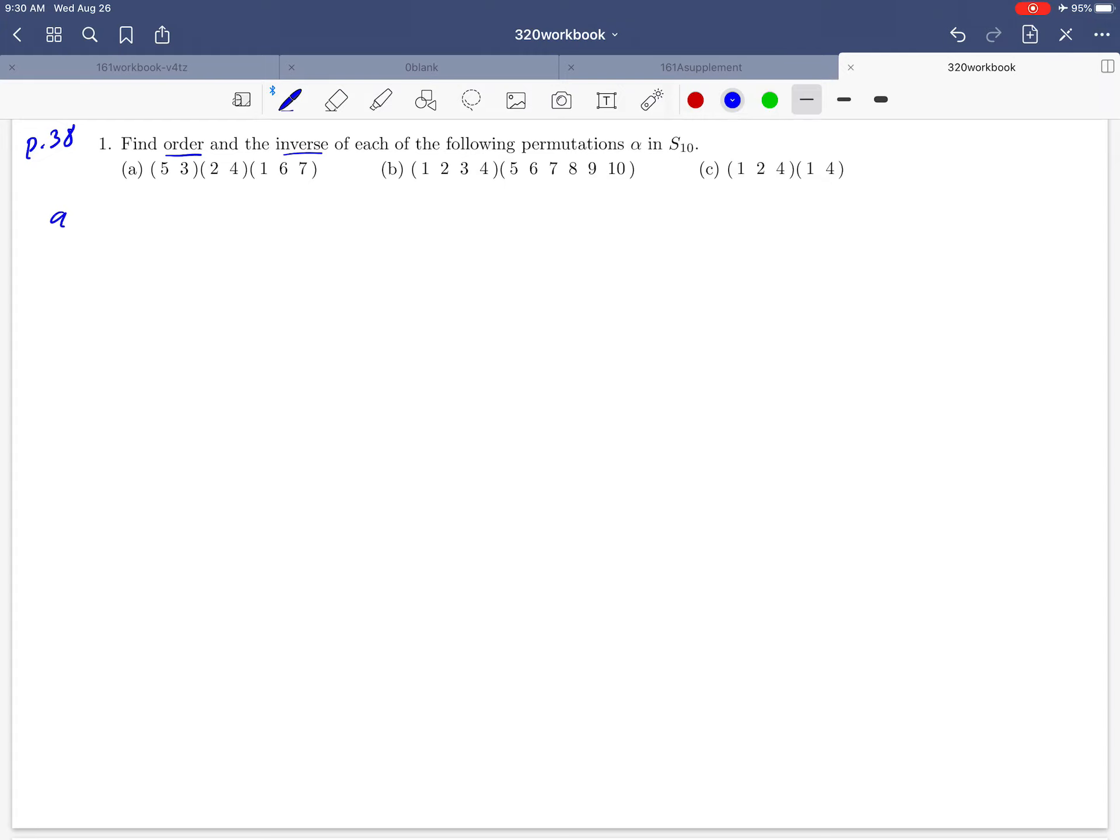Okay so in part A notice that we're given this permutation and the thing that you might notice about it is that it's a product of cycles and those cycles are disjoint. It's a product of disjoint cycles.